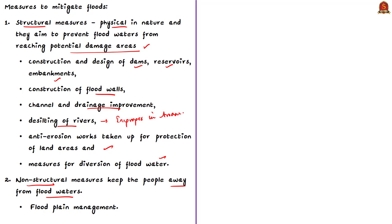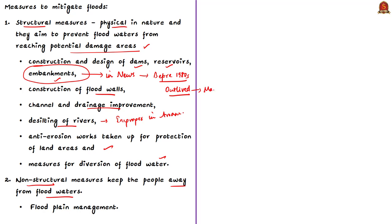Structural measures also include anti-erosion works and measures for diversion of flood waters. The news article mentions construction of embankments along flood-prone rivers as an important measure — these prevent water from passing into adjacent land areas. However, in many areas rivers breach these embankments due to poor construction standards, and many embankments in Assam were constructed before 1980, having outlived their lifespan and become very weak, requiring new embankments and periodic maintenance.